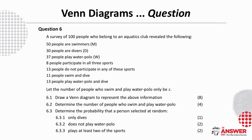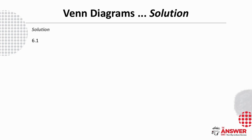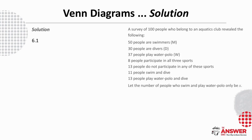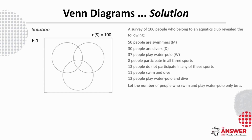There is even more reading required for question 6 — remember not to let this put you off, just take it in one bit at a time. You're told there was a survey of 100 people. In this Venn diagram there were three events: swimmers, divers, and water polo. The first lines of info give us totals — 50 swimmers (using M here because S represents the sample space), 30 divers, and 37 who do water polo.